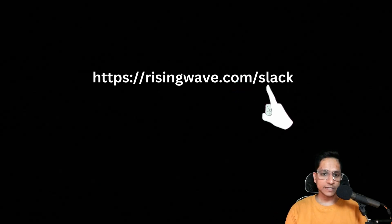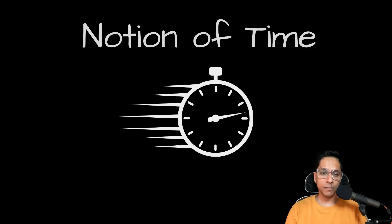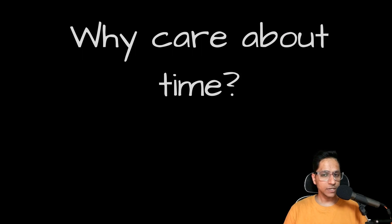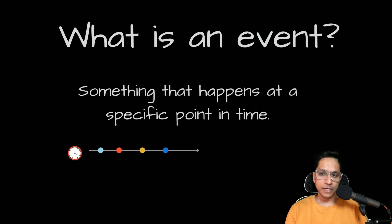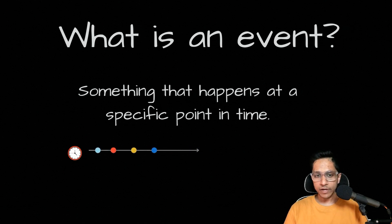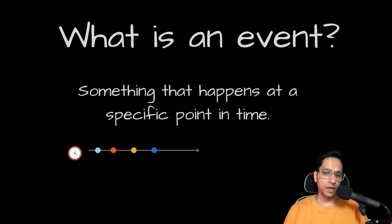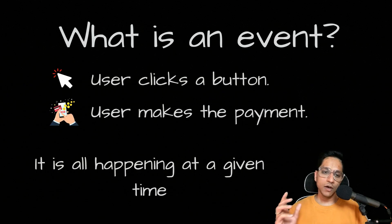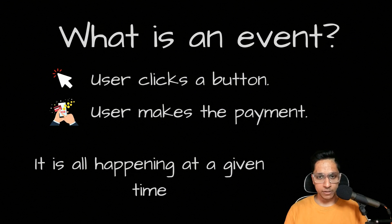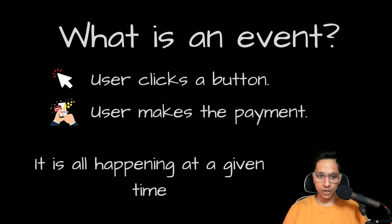Now let's get started. First, let's talk about the notion of time. Why should we care about time? Let's define an event. An event is something that occurs at a specific point in time, and without time, an event cannot exist. For example, a user clicks a button on a website, or a user makes a payment — all of these actions happen at a given time.